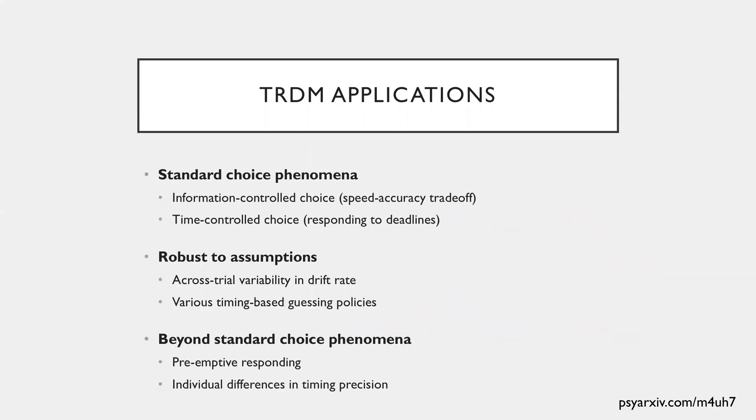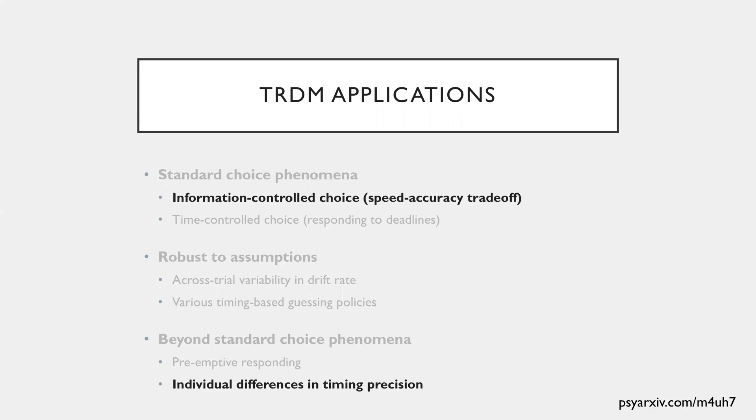So in this pre-print on SciArchive that I mentioned, we went through each of these applications for the TRDM in standard choice phenomena, we tested some of the assumptions we've made in the TRDM, and then we looked where that phenomena where the TRDM can go where evidence accumulation models can't. So in today's talk, I'm only going to refer to a couple of these, and I'll point you to that pre-print for details on the rest of it.